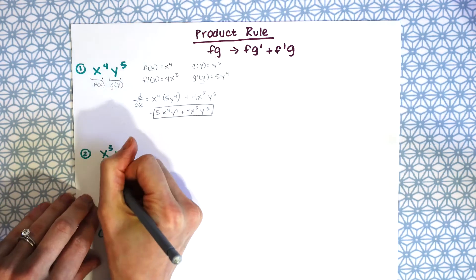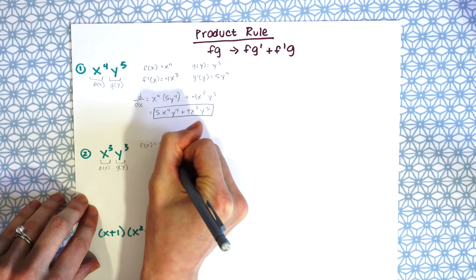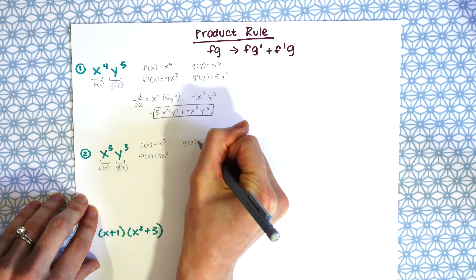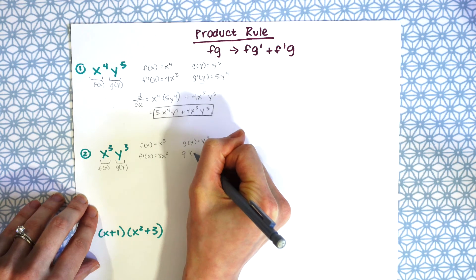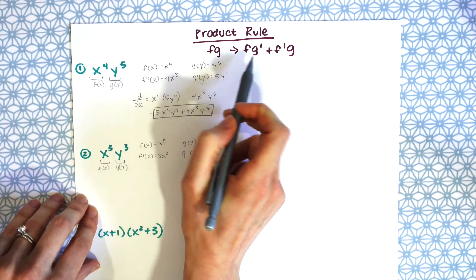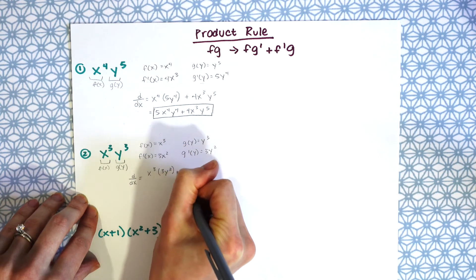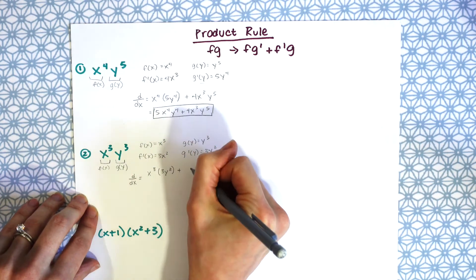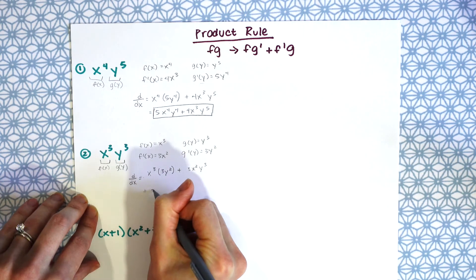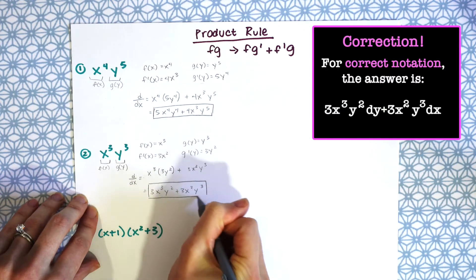For the second product rule example, we have x cubed times y cubed. So f of x equals x cubed, f prime equals 3x squared, g of y equals y cubed, and g prime equals 3y squared. Plugging into the product rule: x cubed times 3y squared plus 3x squared times y cubed, which simplifies to 3x cubed y squared plus 3x squared y cubed.